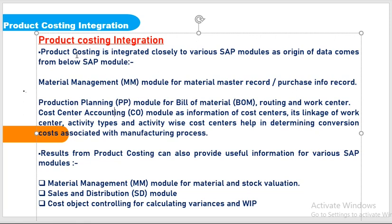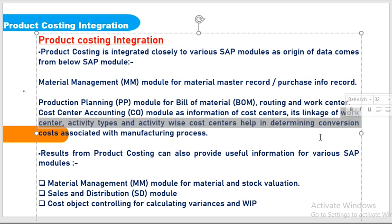In CO, product costing is a sub-module. In Material Management, we should be aware of material master records and purchase info records — these two are very important for learning product costing. In the PP module, we should know bill of material, routing, and work centers, which are the master data of SAP PP. For cost center accounting, we should be aware of cost centers and their linkages with work centers and activity types, which are helpful in determining conversion cost.